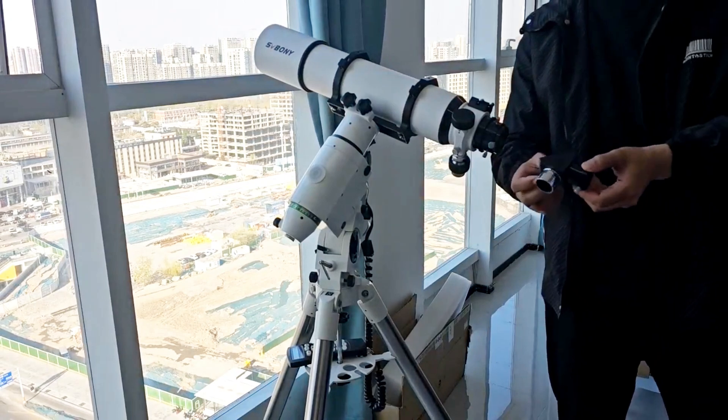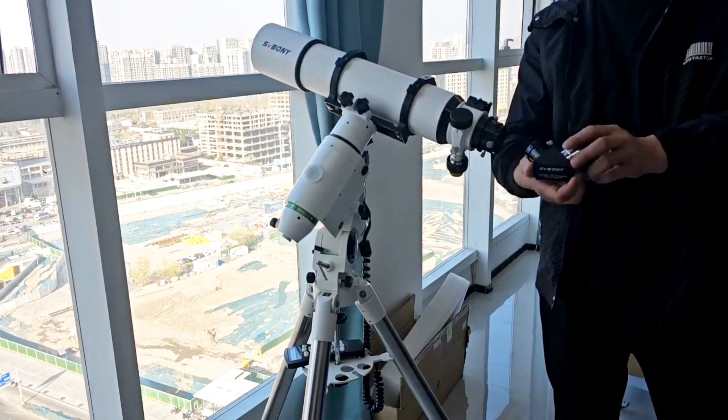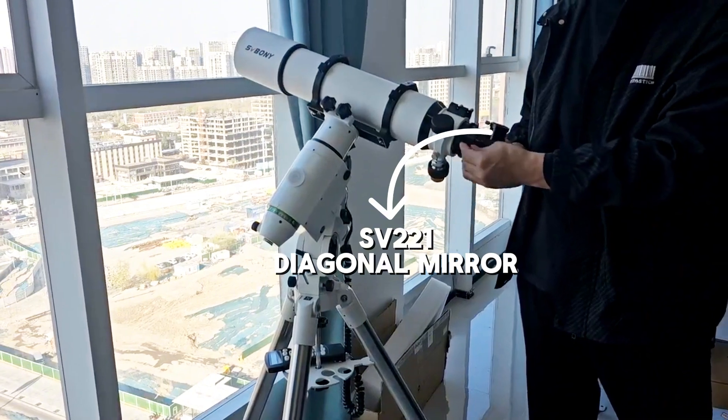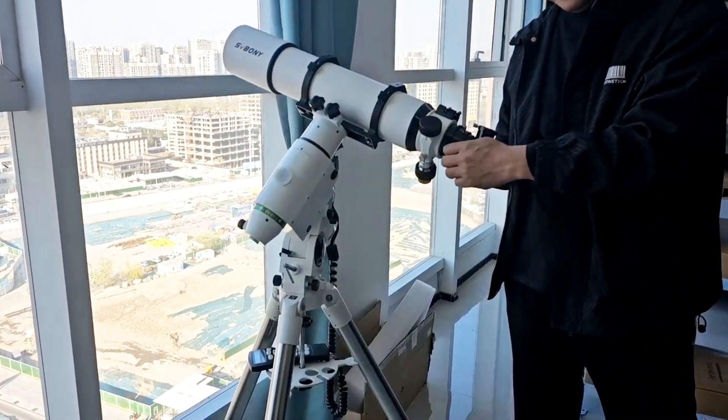Next, we will install the Iceway 221 Zenith mirror. The Zenith mirror can adjust the telescope viewing angle to a comfortable position, making long-period observation easier.